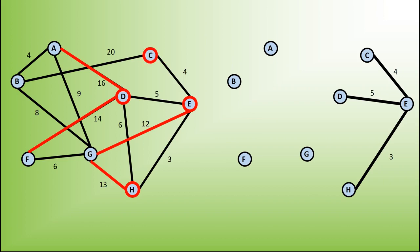This adds the vertex C and it adds the edge from B to C. The edge of minimum weight now is 12, so I add that one, which adds vertex G and three more edges. The minimum weight edge now is 6, going from F to G, and I've added the vertex F. I now don't need to consider the edge from D to F either.